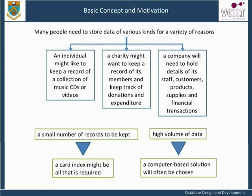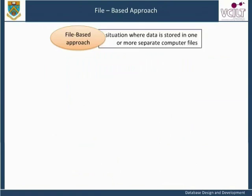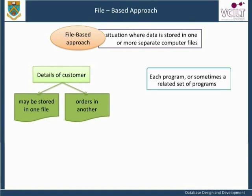This might sound like a simple solution, but there are a number of different approaches that could be taken. If a company decides to use computer-based files that each application program can access as and when required, this would work, but leaves the organization vulnerable to problems of inconsistencies when changes in the data occur. The term file-based approach refers to the situation where data is stored in one or more separate computer files. Computer programs to perform the various tasks required by the business process data that is stored in computer files. Each program, or sometimes a related set of programs, are called computer applications.